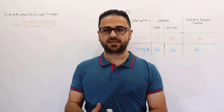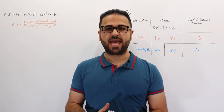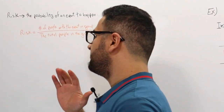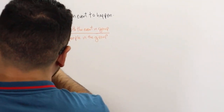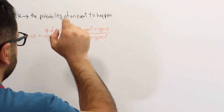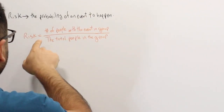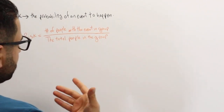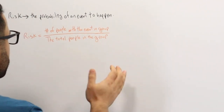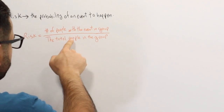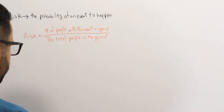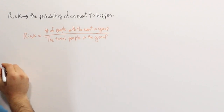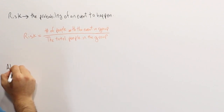Hi everyone. In this lecture I'm going to go over the absolute risk reduction. Previously I covered that risk is the probability of an event to happen, and to calculate the risk we need the number of people with an event in the group over the total people in that same group. So what is absolute risk reduction?